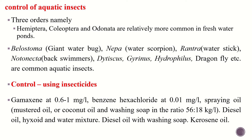Out of 11 orders of class Insecta, three orders — Hemiptera, Coleoptera, and Odonata — are relatively more common in freshwater ponds.